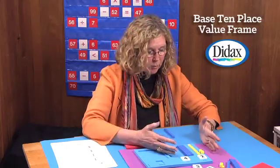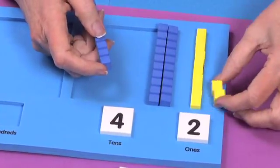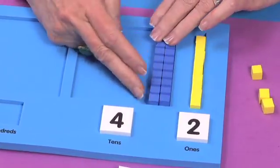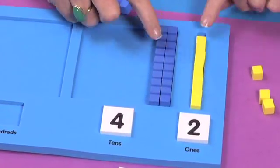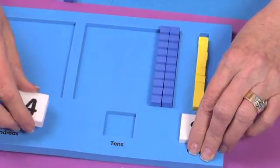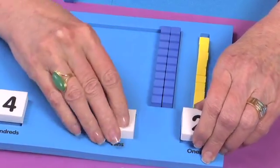So now in order to subtract 13, if I take away a 10 and I take away 1, 2, 3, what I'm left with is 10, 20, 9. So the answer to 42 take away 13 is 29.